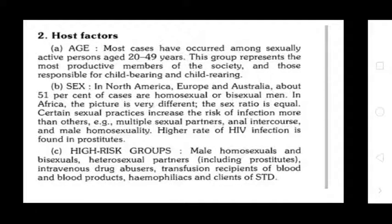Host factors — Age: Most cases occur through sexual activity in persons aged 20 to 49 years. This group represents the most productive members of society and those responsible for child-bearing and child-rearing. Sex: In North America, Europe, and Australia, about 51% of cases are in homosexual and bisexual men. In Africa, the picture is very different — the sex ratio is nearly equal. Certain sexual practices increase the risk of infection more than others, including multiple sexual partners, anal intercourse, and male homosexuality. High rates of HIV infection are found among prostitutes.